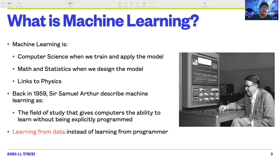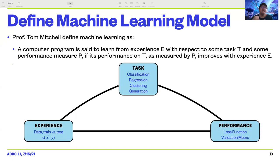Back in 1959, Samuel Arthur described machine learning as the field of study that gives computers the ability to learn without being explicitly programmed. To reiterate his words, I would say machine learning is learning from data instead of learning from the program. You will see the phrase 'learning from data' appear many times in my slides, because this is my personal motto for what machine learning is.